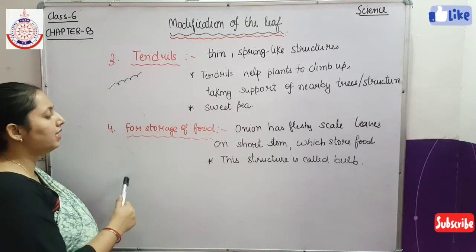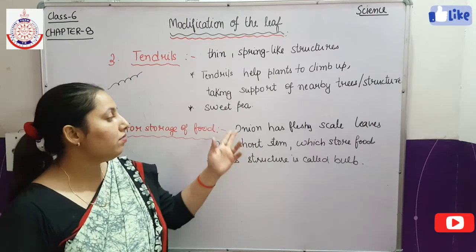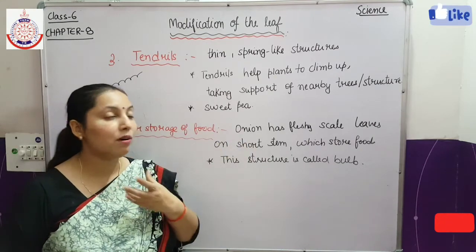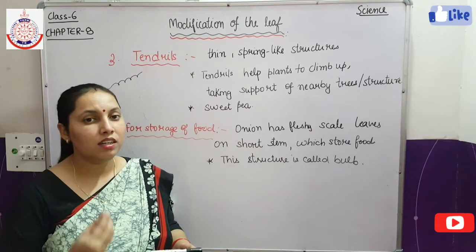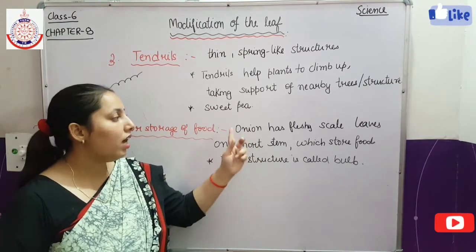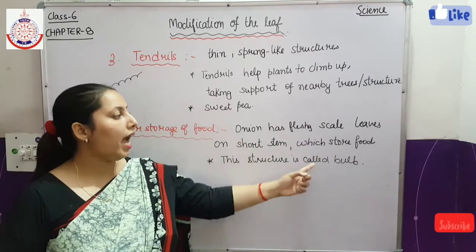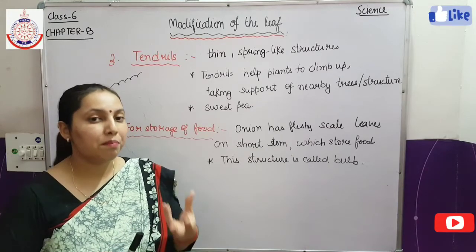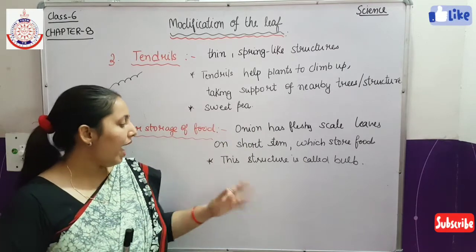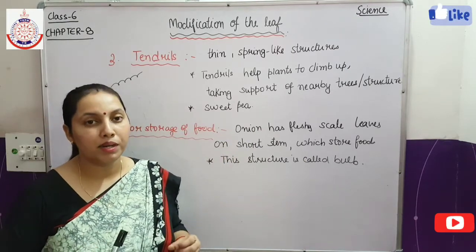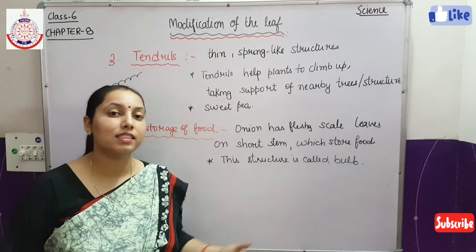The next modification is for the storage of food. The leaves also store food. You have seen the onion — it has very fleshy scale leaves. The onion has fleshy scale leaves on a short stem — because its stem is very short — and these leaves store the food. The food is stored in the form of very fleshy scale leaves, and this structure is known as a bulb. Whenever there is storage of food in the leaves, the structure that is created is called a bulb.